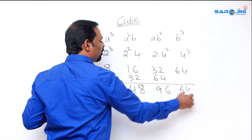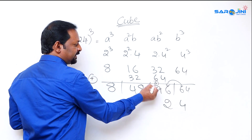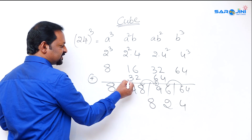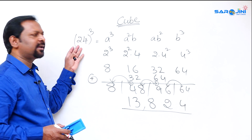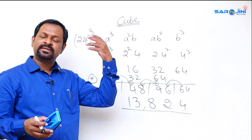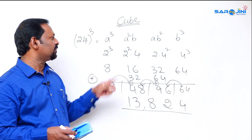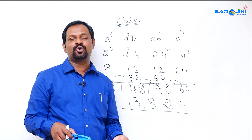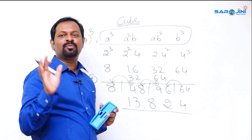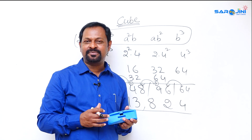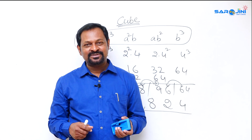Now balance 24 cube: 8, 48, 96, 64 — take 4 from 64, carry 6; 96 + 6 = 102, write 2 carry 10; 48 + 10 = 58, write 8 carry 5... working through the carry: result is 13,824. So whatever number you take — 24, 72, 48, 98, 36 — up to 99, just compute a³, a²b, ab², b³, then double the middle two terms, and balance. Hope you understood the cubing concept. Thank you very much, have a nice day!